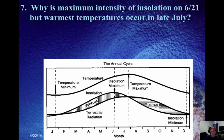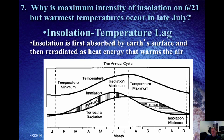Why is the maximum intensity of insolation on June 21st, but the warmest temperatures don't occur until late July or even early August? June 21st is the longest day of the year in the Northern Hemisphere, so why is it not the hottest day? Even though it has the strongest sunlight, the Earth takes some time to heat up. Insolation needs to be absorbed by Earth's surface and then re-radiated as infrared heat energy to warm the air, causing a lag until about the end of July or beginning of August for maximum temperatures to be reached.